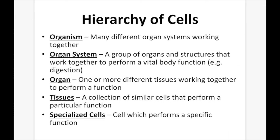The most complex is going to be the organism itself. In an organism you're going to have many different organ systems working together. Starting at the bottom, the least complex are our specialized cells — these can be things like a muscle cell or a nerve cell — and they're a cell that performs a specific function.